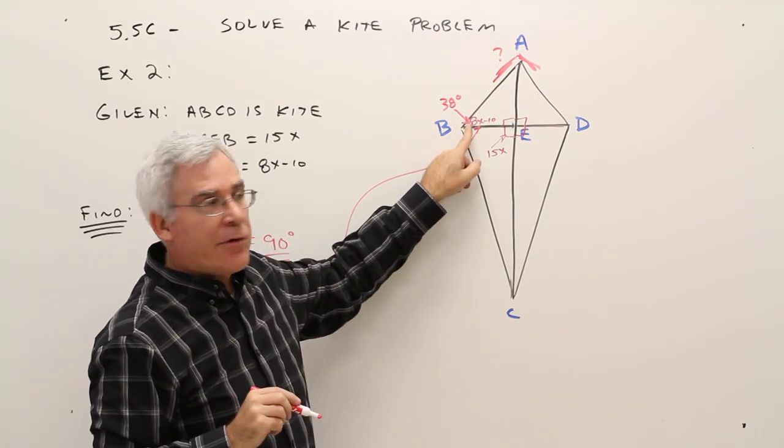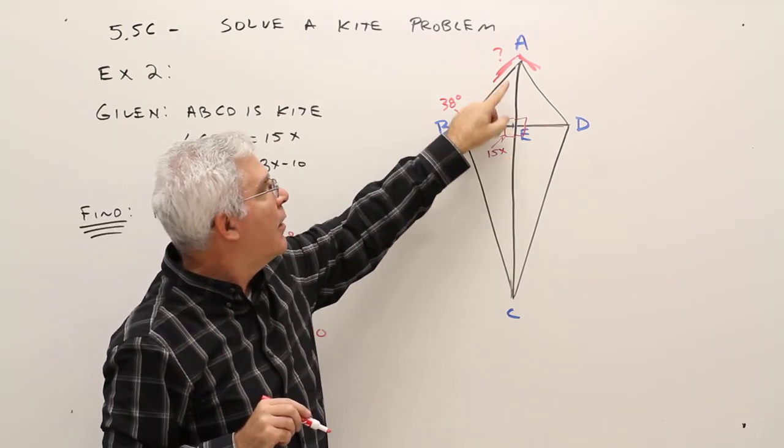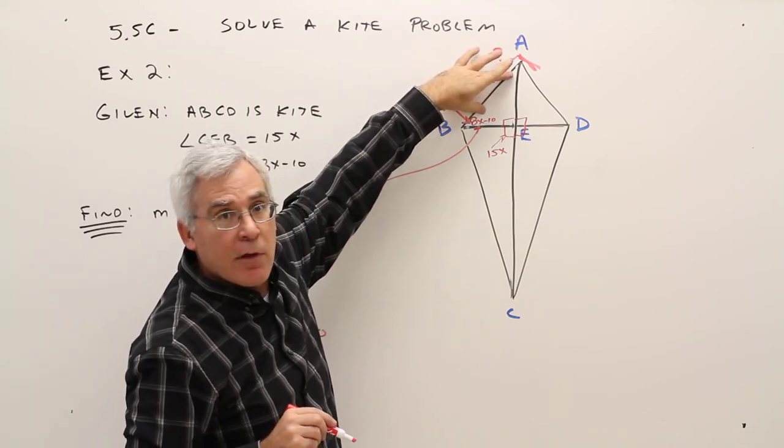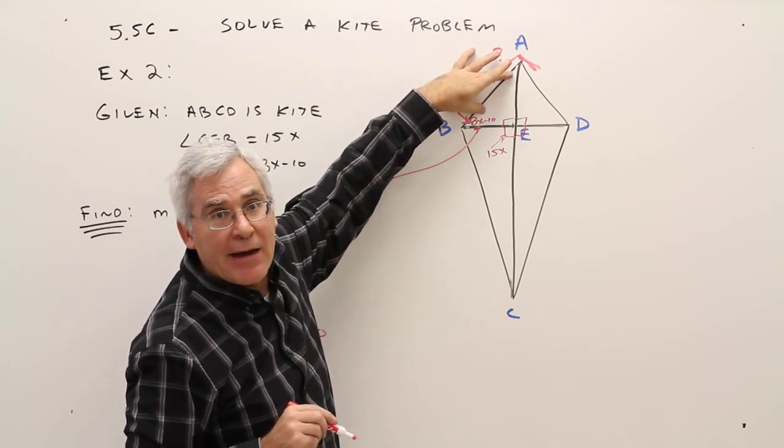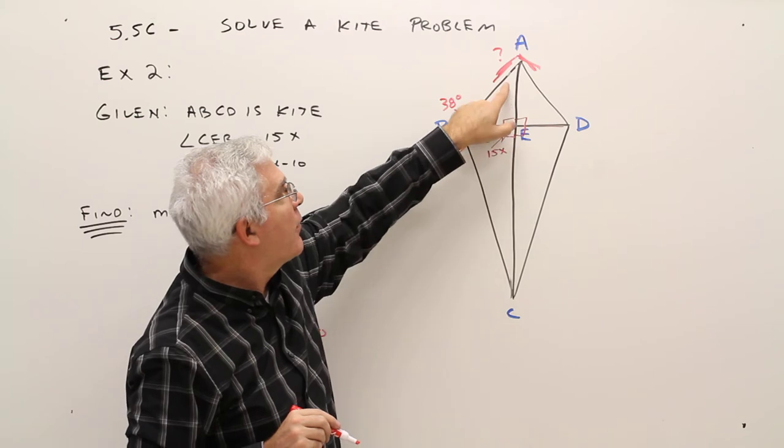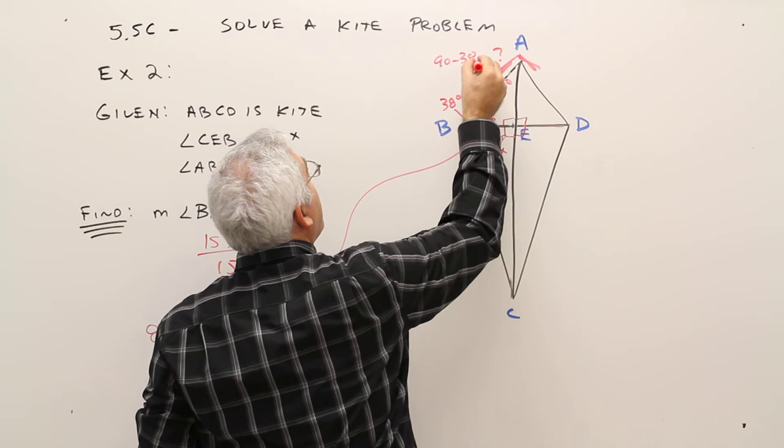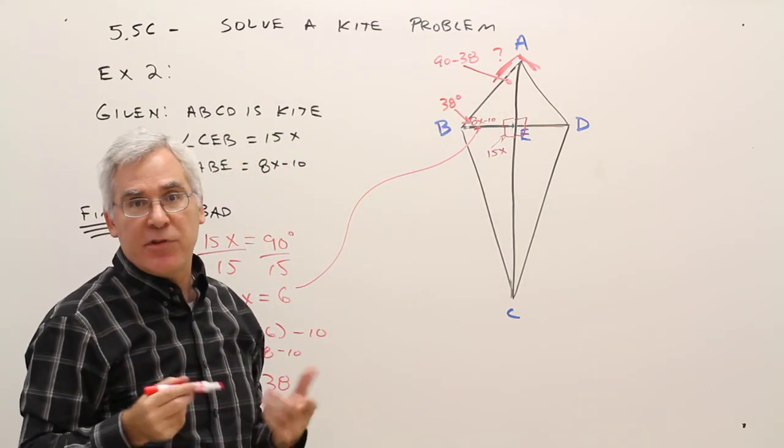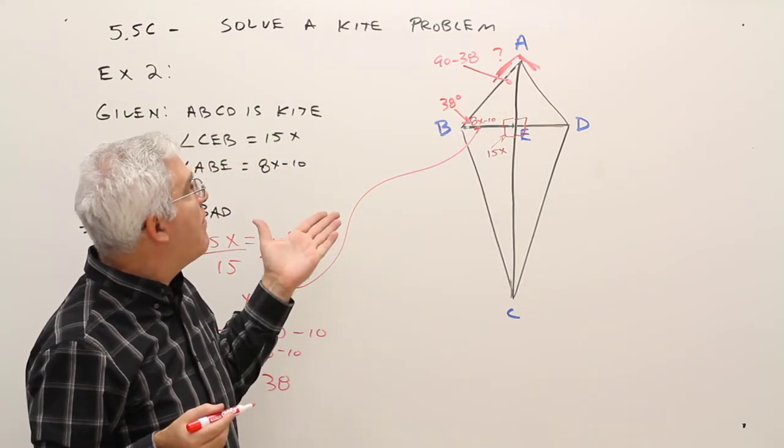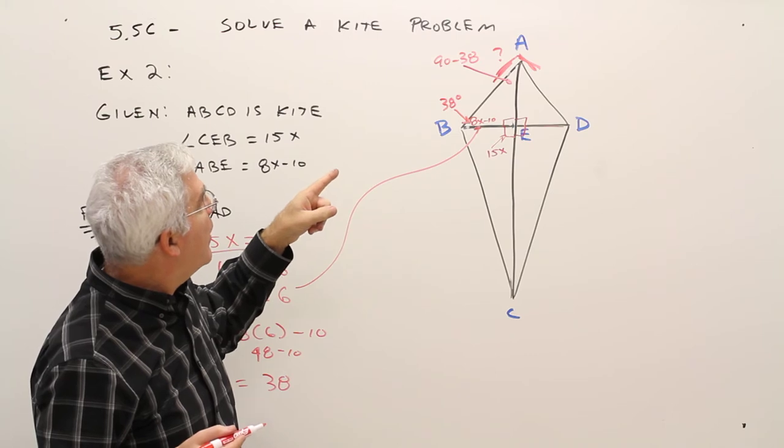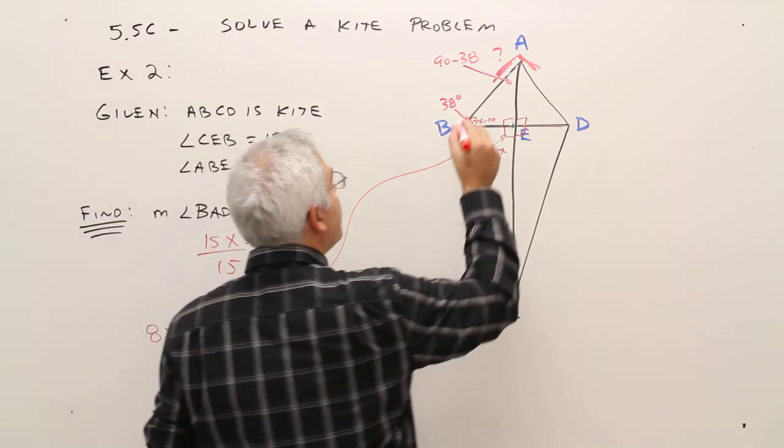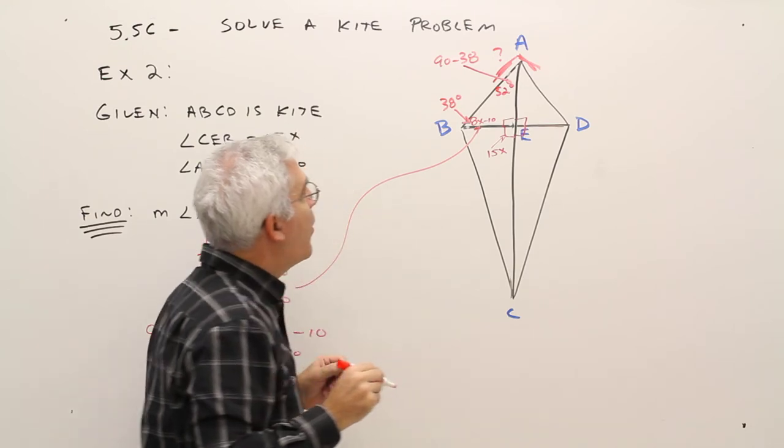All right, well if you're 38 degrees and if you're a right angle, I know that these two angles must be complementary. Must sum 90. I've already got 90 there. So this angle here is going to be 90 minus 38. Just a complement. So 90 minus 38. That would be 52 degrees.